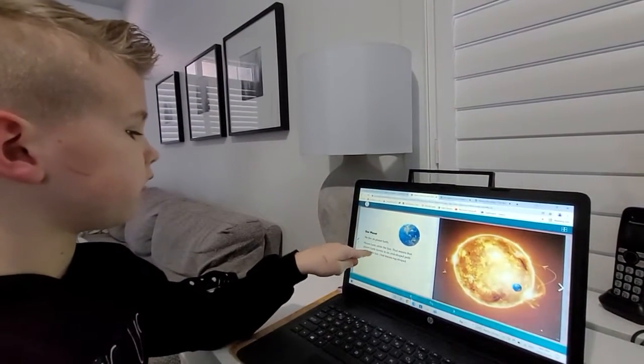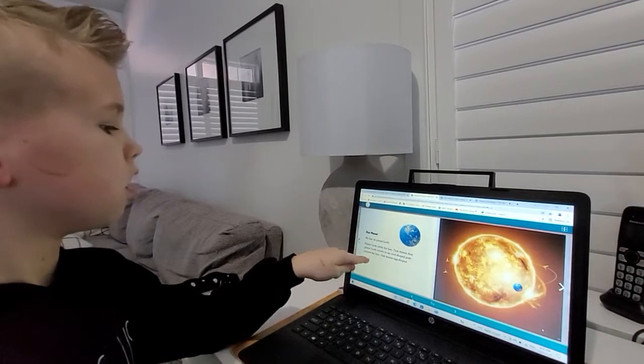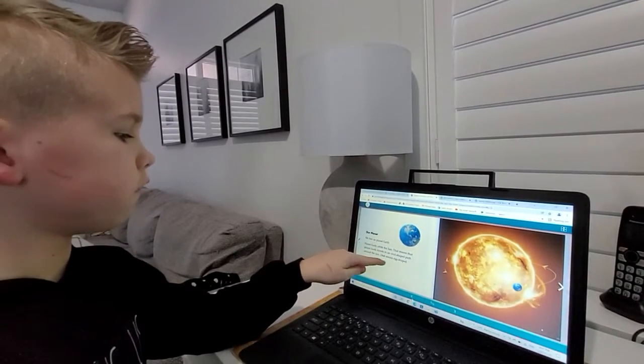That means that planet Earth travels in an oval-shaped path around the sun. Oval means a shape.